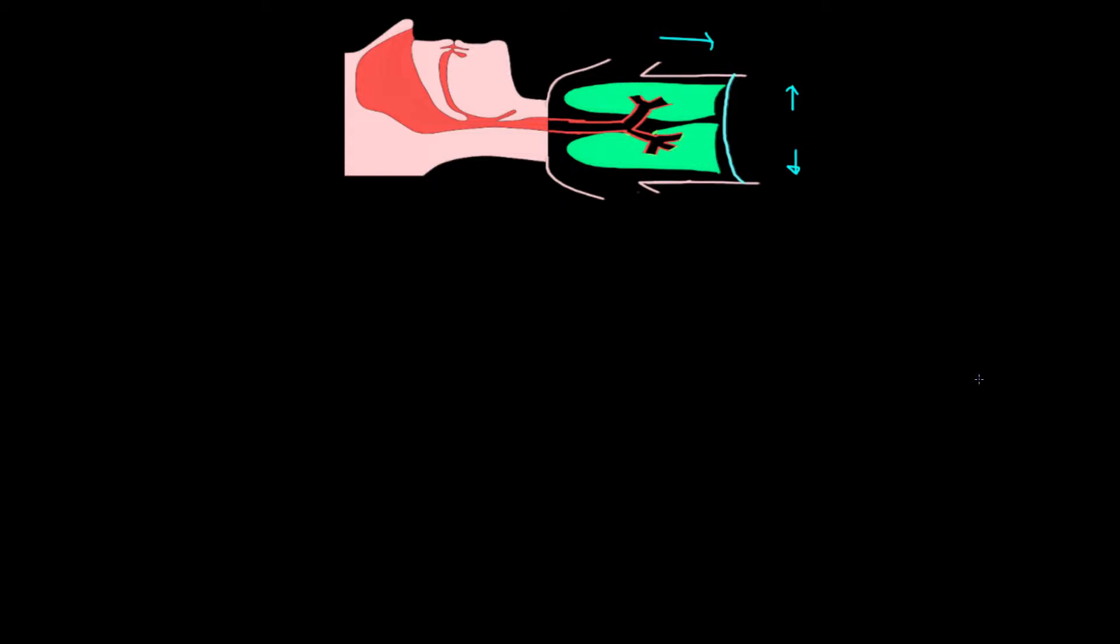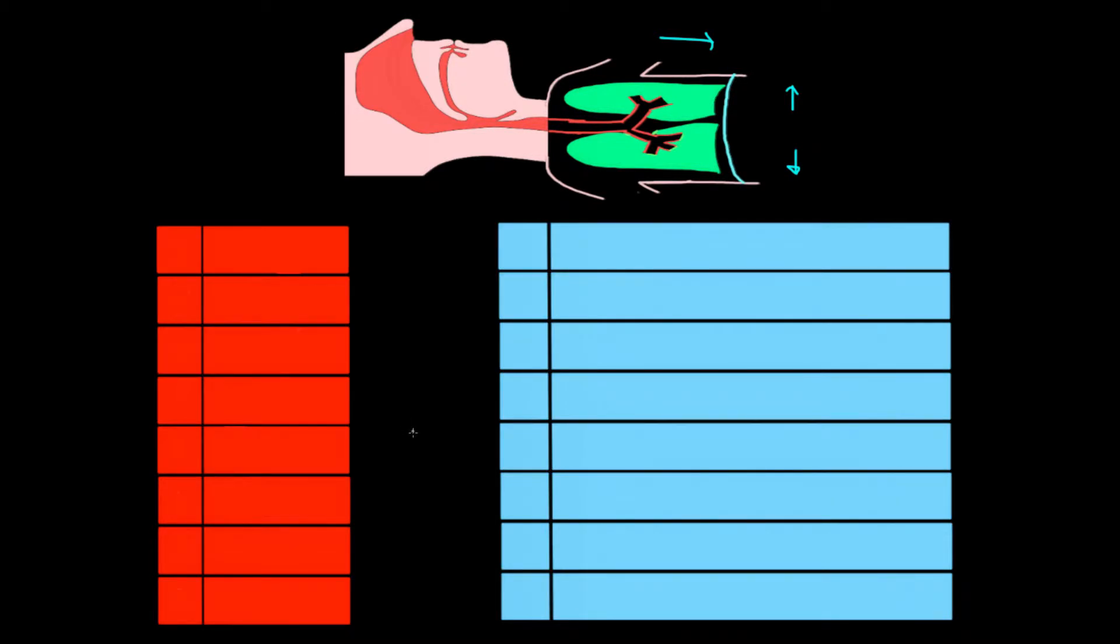Figuring out who has obstructive sleep apnea can sometimes be a challenge, and fortunately there are a couple different questionnaires we can use to help us. We're going to go over two of these questionnaires here. The first one in red has a really cool name - it's called the Stop Bang Questionnaire. Each of these letters in the acronym Stop Bang stands for something, a question that you may ask this patient. The S stands for snoring.